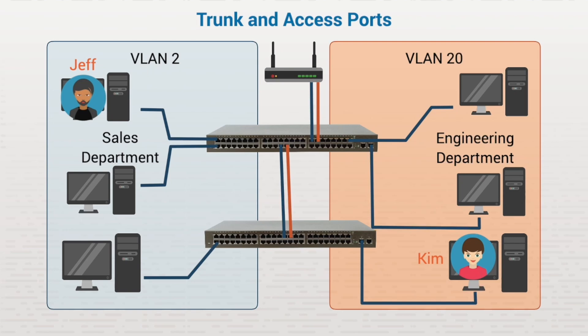Let's look at that packet being sent from Jeff to Kim again, only this time with trunk ports and tagging. When the packet reaches the trunk port from Jeff's workstation in VLAN 2, it's given the VLAN tag of 2 in the header, so that when it reaches the router, it knows that the packet came from VLAN 2. It's tagged again at each trunk port it traverses until it reaches Kim's workstation.